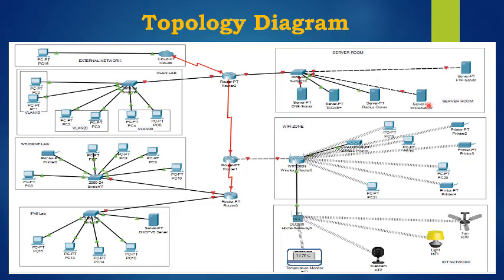We have a server room with five different servers: a DNS server, two authentication servers, a web server, and an FTP server. Then there is a wireless zone with all wireless devices and a wireless router, on which we are going to configure security features.